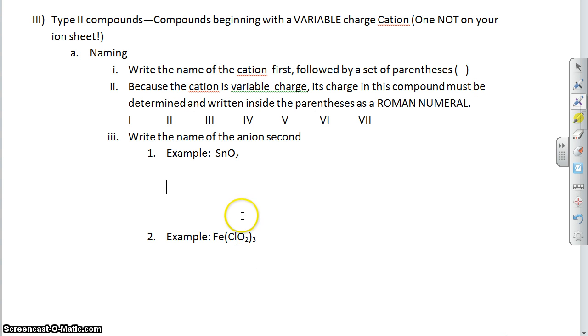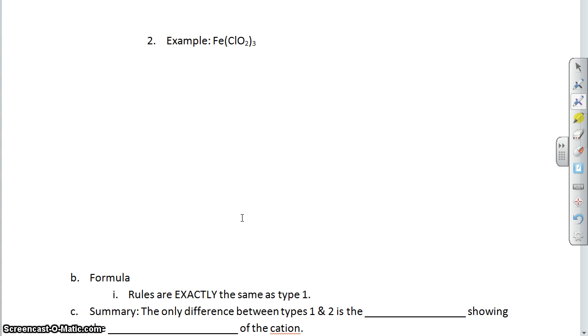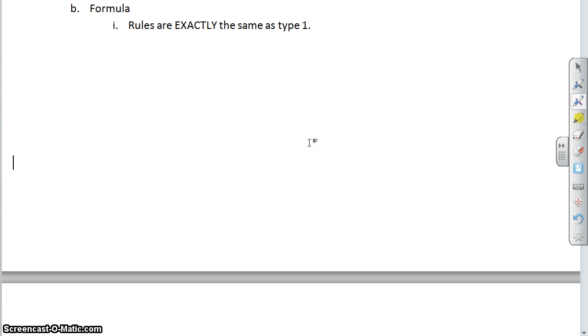So that is for naming. Well, how do you write formulas? I haven't left a lot of time for writing formulas here because they're incredibly simple. The rules are exactly the same as they were for type 1. Nothing changes. The only thing to be aware of is that a lot of people don't realize this. You've got to remember that the charge is given in the parenthesis, not the subscript.